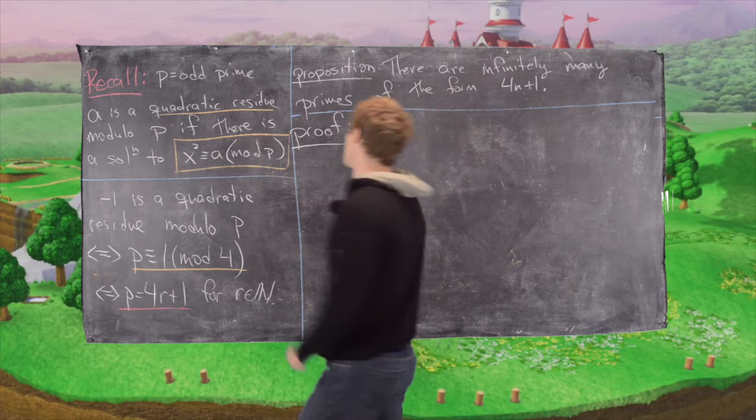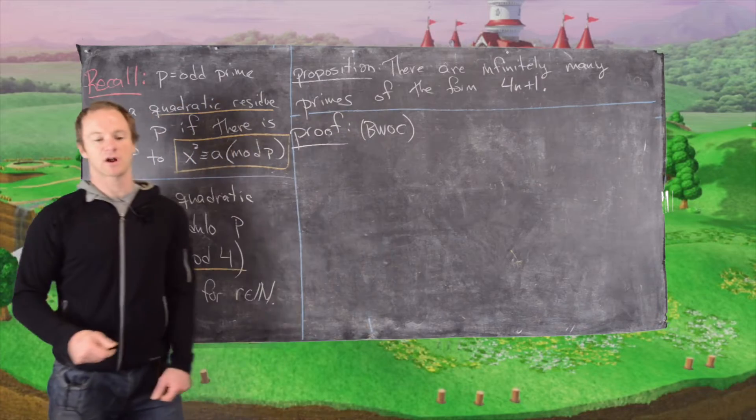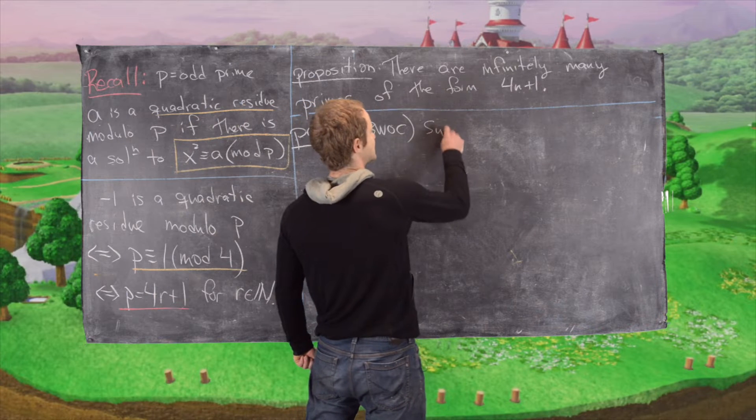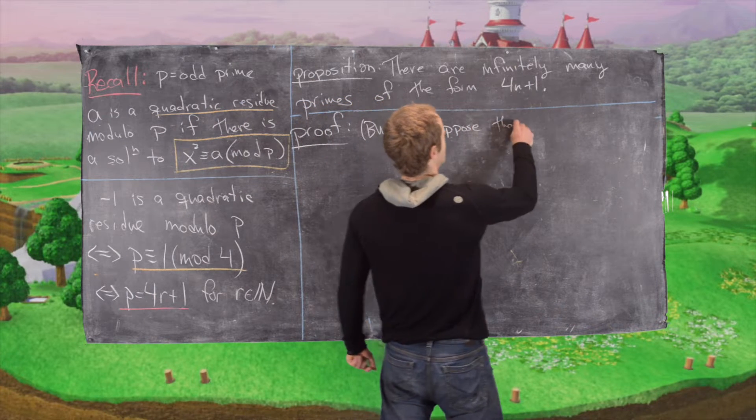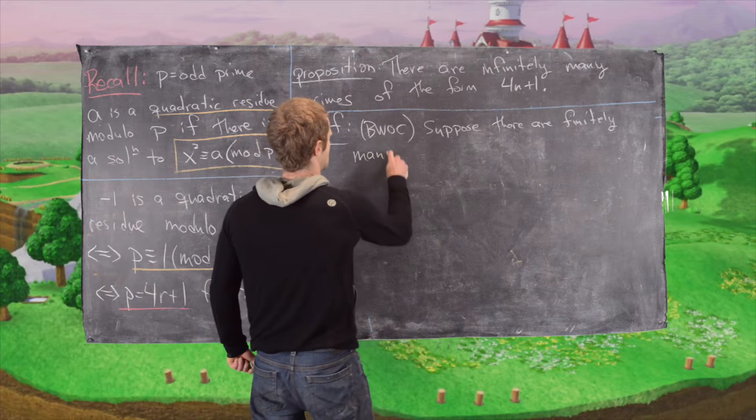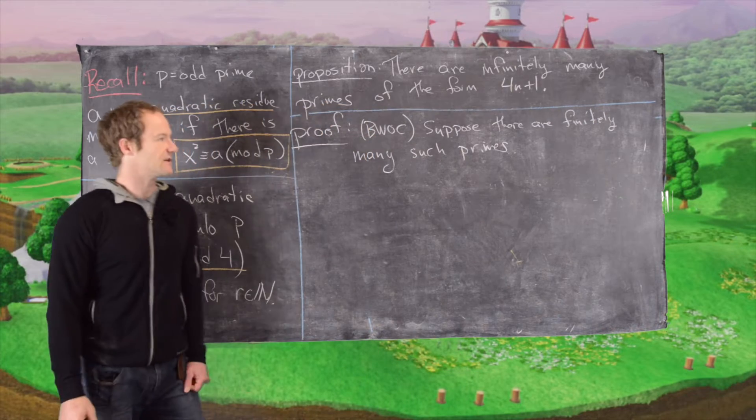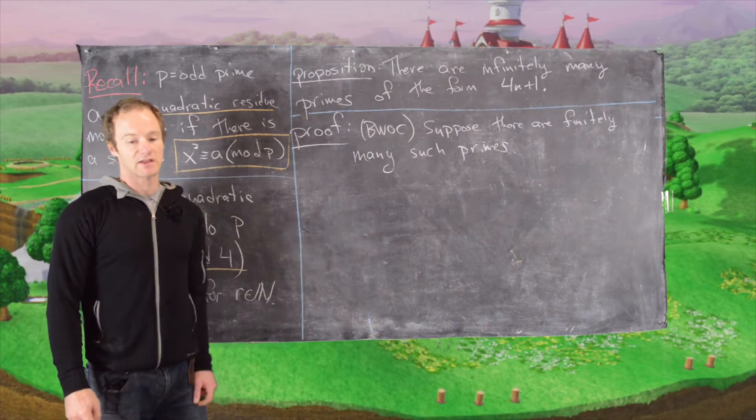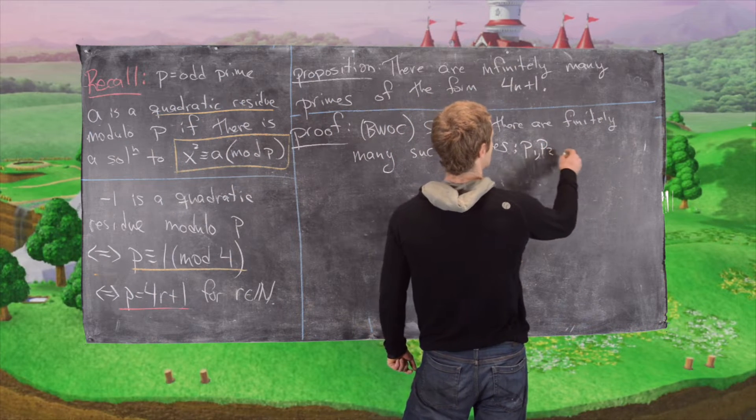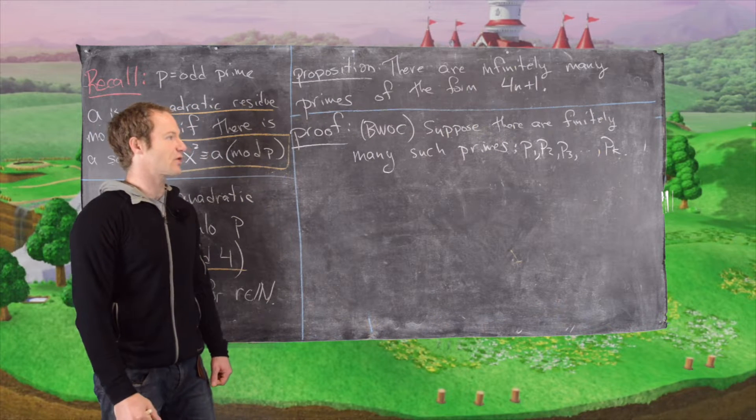So let's do the proof. We're going to work towards a contradiction and we'll see that we'll split off into a couple of cases. Each case will lead to its own contradiction. So let's suppose there are finitely many such primes. In other words, we're supposing that there are not infinitely many primes of the form 4n plus 1. Let's label them p1, p2, p3 up to pk, so we're assuming there are in fact only k primes of the form 4n plus 1.